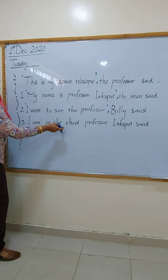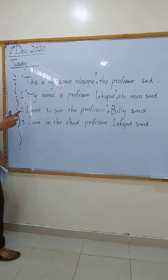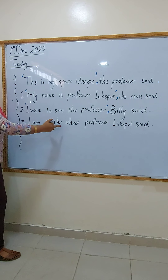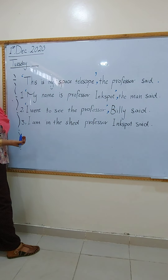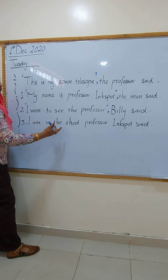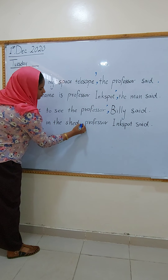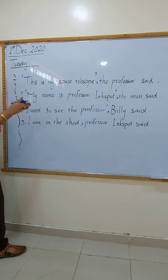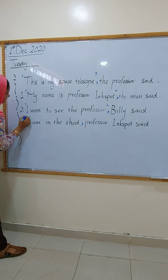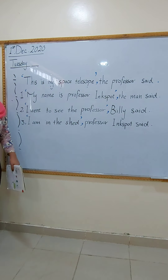Go down to number three: 'I am in the shed,' Professor Inkspo said. Firstly, I have to put a comma here. And what's the speech of the professor? He said, 'I am in the shed.' So here I have to put the speech between these two quotation marks.